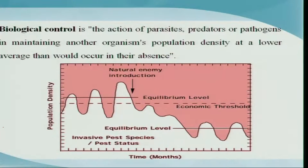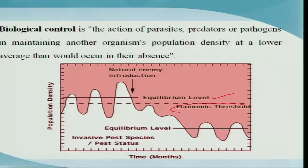So how you can actually define biological control is: the action or activity of the predator, parasites, or pathogen which actually keeps the pest population density at a lower level. With this graph, we can understand better. We all know about the general equilibrium level of the pest, and we know that whenever this general equilibrium position of the pest goes beyond the economic threshold level, then it becomes pestiferous.